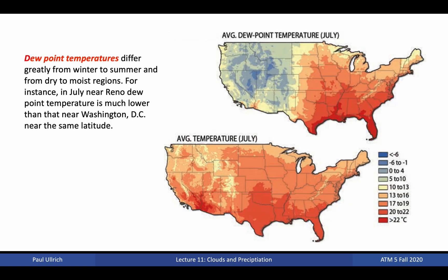Recall that dew point temperature is a measure of the amount of water vapor in the atmosphere. When dew point temperature is low, that implies that there is not a lot of water in the atmosphere, and so temperatures must get low for condensation to occur. When dew point temperature is high, there is more water in the atmosphere, and condensation can occur at higher temperatures. Dew point temperature differs greatly from winter to summer — summertime is generally more humid, and so the dew point is higher. However, dew point temperature also varies quite significantly between dry and moist regions. In the continental U.S., July temperatures are relatively uniform across the country, except in the mountainous regions and deserts. However, dew point temperatures show a clear east-west divide, because the western U.S. tends to be much drier than the eastern U.S., so dew point temperatures tend to be lower.